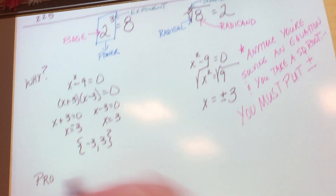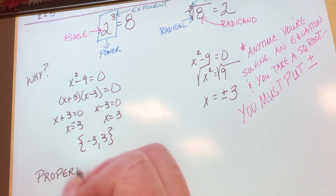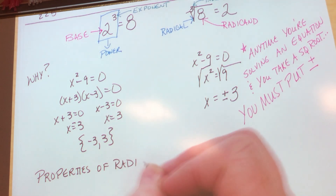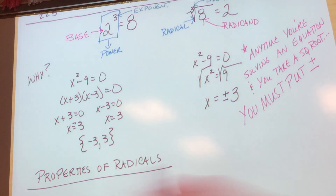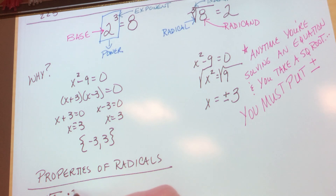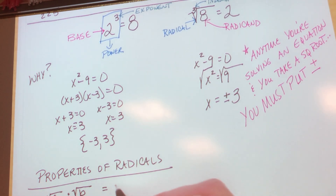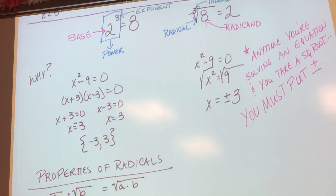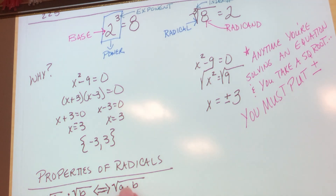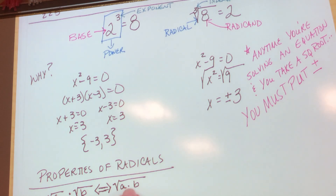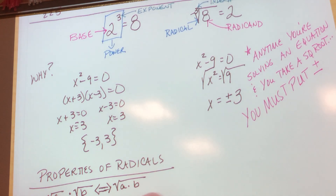Properties of radicals — there are two of them. The first one says: the square root of a times the square root of b equals the square root of (a times b). It goes both ways — I can split or combine. For example, the square root of 6 equals the square root of 2 times the square root of 3. The second property says: the square root of a over the square root of b equals the square root of (a over b). That one also goes both ways.